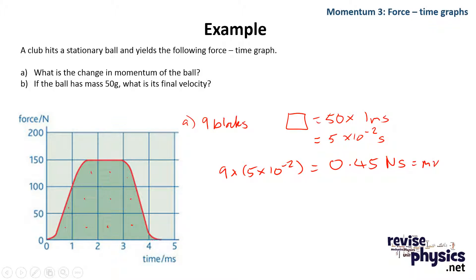So that's my change in momentum, now it wants to know the final velocity. Well, I know that that 0.45 is equal to mv. I know that my mass is 50 grams, which is 0.05 kilograms. So 0.45 divided by 0.05 will give me my final velocity, which is 9 meters per second.